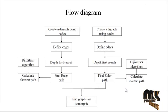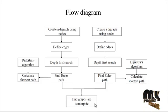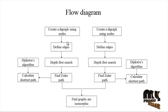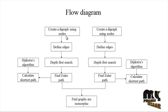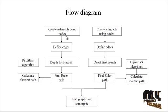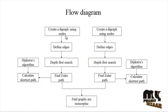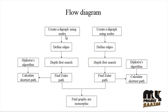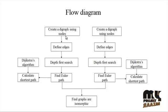Now let us discuss about the flow diagram of the process. These are the overall flow diagram. First of all, create a graph using nodes — there is an inbuilt function for that. Two types of processes run simultaneously. Finally, we define the two graphs as isomorphic or not.